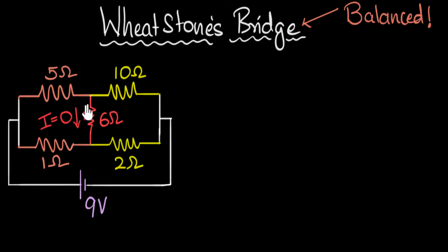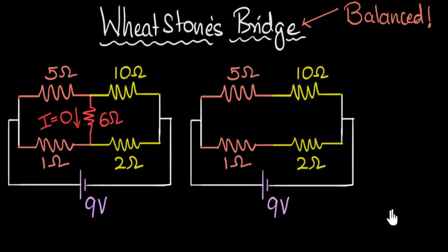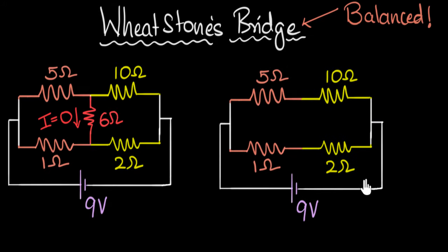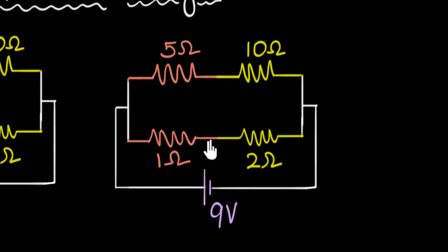So why is the current zero? How can we logically understand this? Books derive it using Kirchhoff's laws, but I always wondered: why, if the ratios are the same, would the current be zero? Here's how I like to think about it. First, make a copy of this circuit without the red resistor and see how the voltages get distributed. In this case, these two resistors are in series, and similarly these two are also in series. In series, current is exactly the same — and from Ohm's law, V equals IR, so voltage must be proportional to resistance.